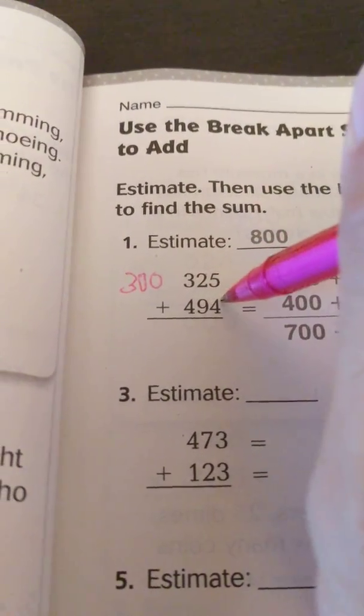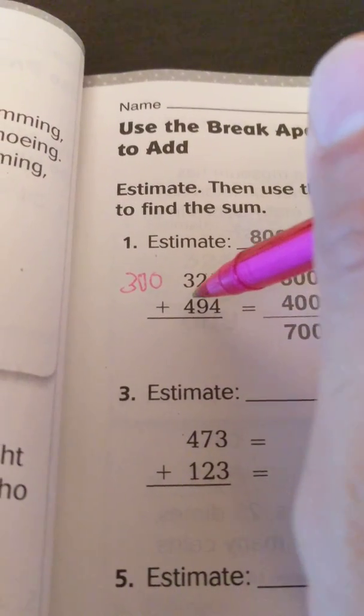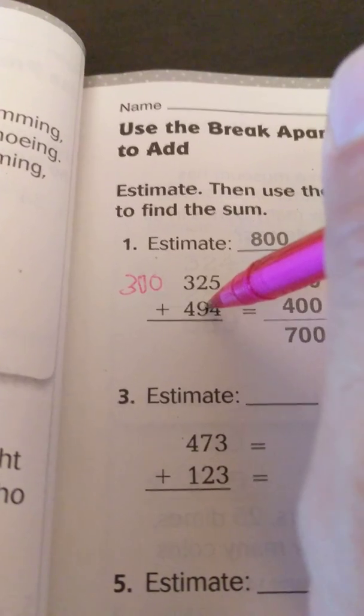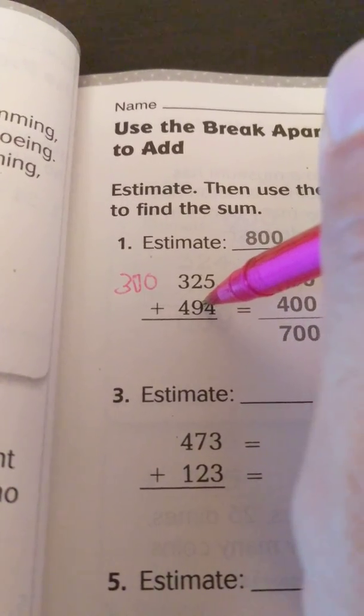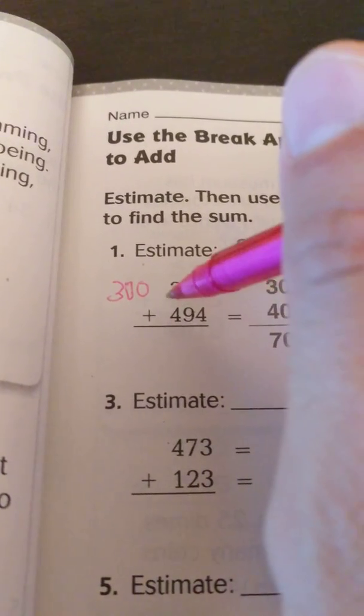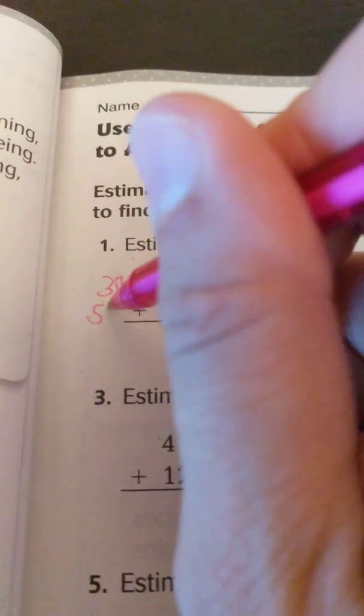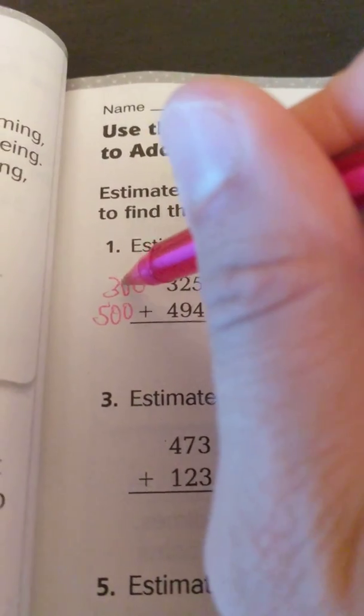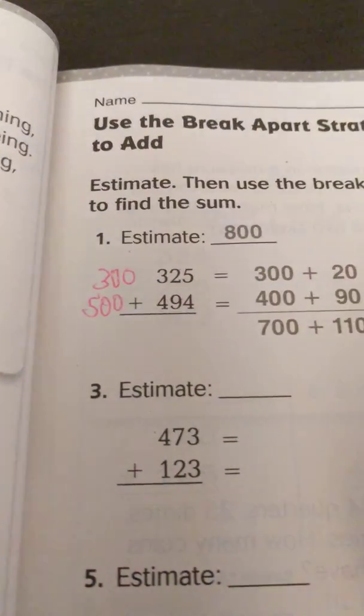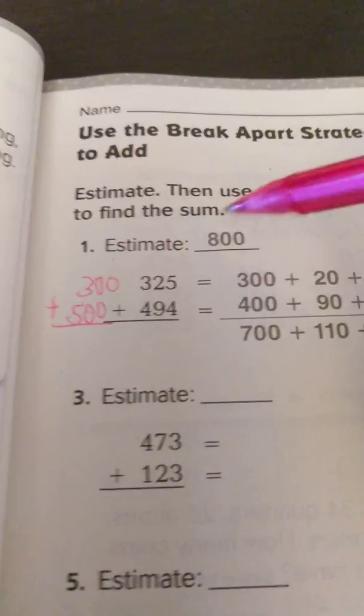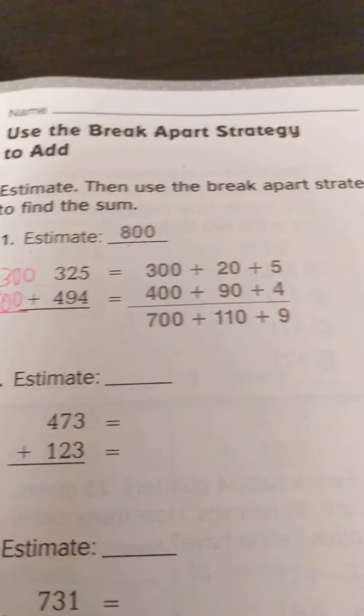Then if I look at 494, again I look at my tens to figure out my hundreds. And if I'm looking at my tens, the tens are 5 or higher, the digit's 9. And so the hundred is going to round up to 500. So we have 300 plus 500, and that's how they got their 800 there. So that's how they found the estimate.